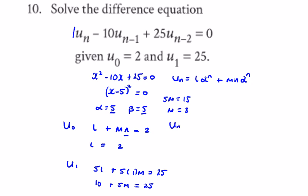So u_n becomes L = 2 times α = 5 to the power of n, plus m = 3 times n times α to the power of n.